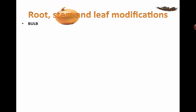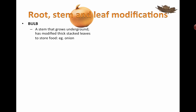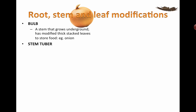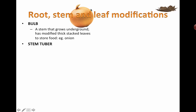There's a bulb. An onion is a perfect example — it's a stem that grows underground and has modified thick stacked leaves to store food. Next time you eat that, think about it. You're actually eating a stem. That is not a fruit.